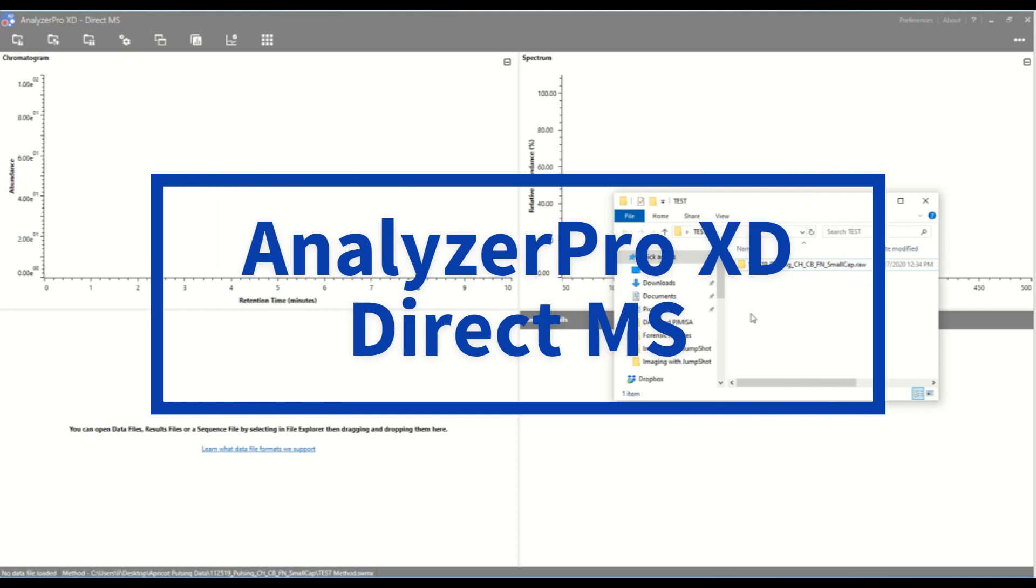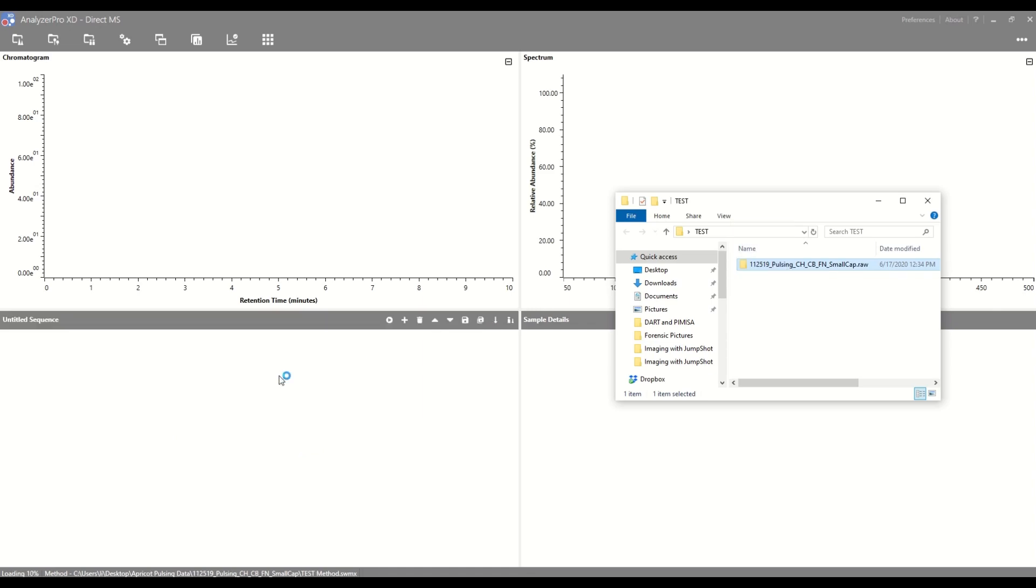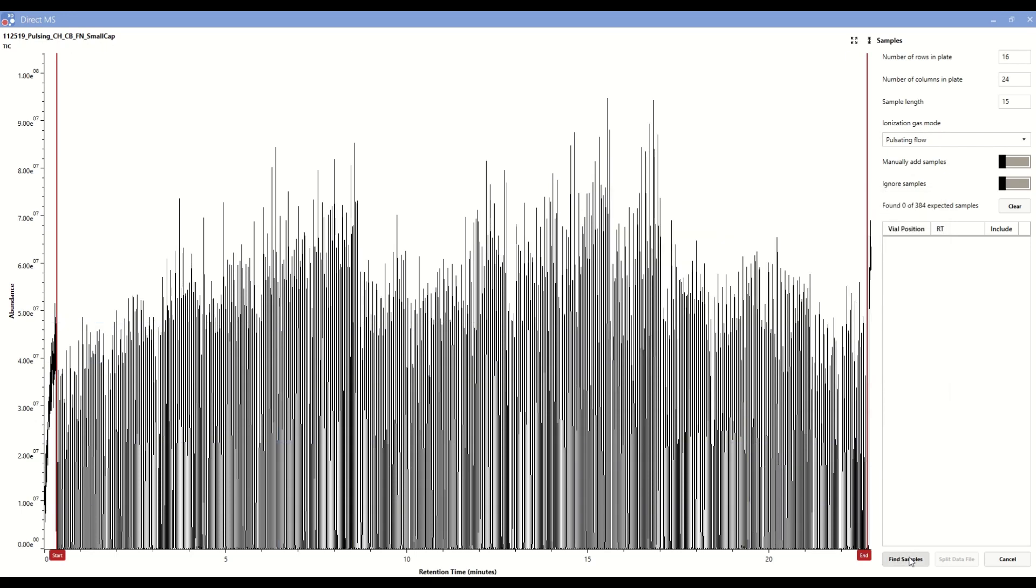Our post-acquisition software Analyzer Pro XD completes the workflow in just a few extra minutes. Simply drag and drop your data file into Analyzer Pro and load the TIC of 96 or in this case 384 samples.